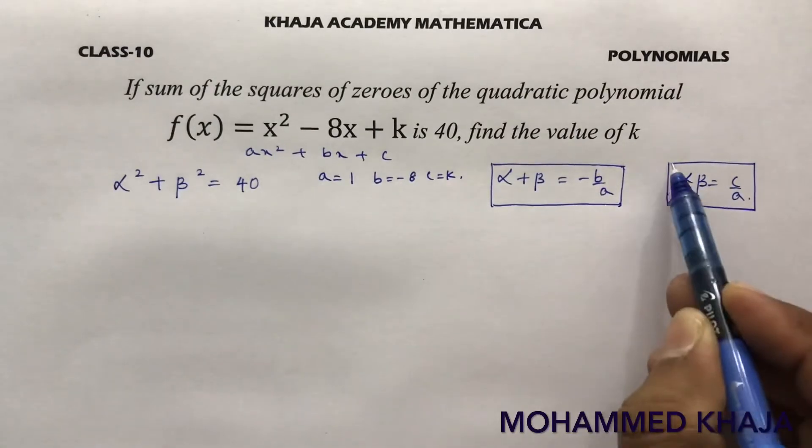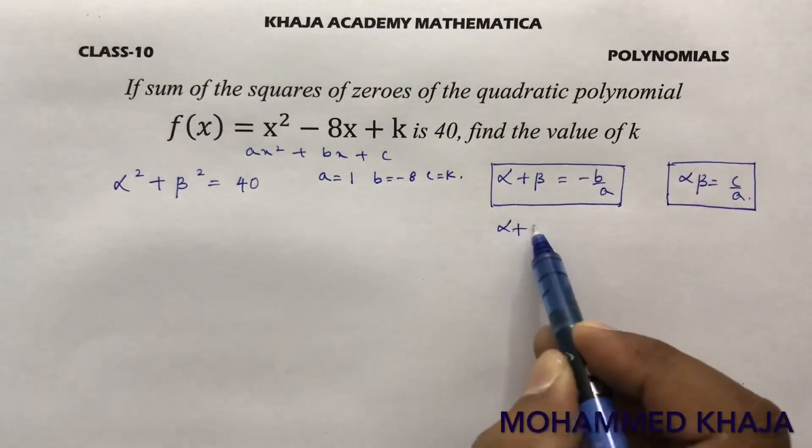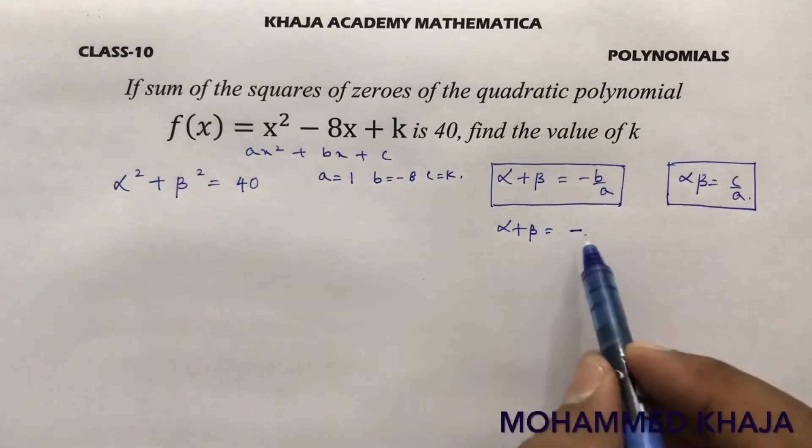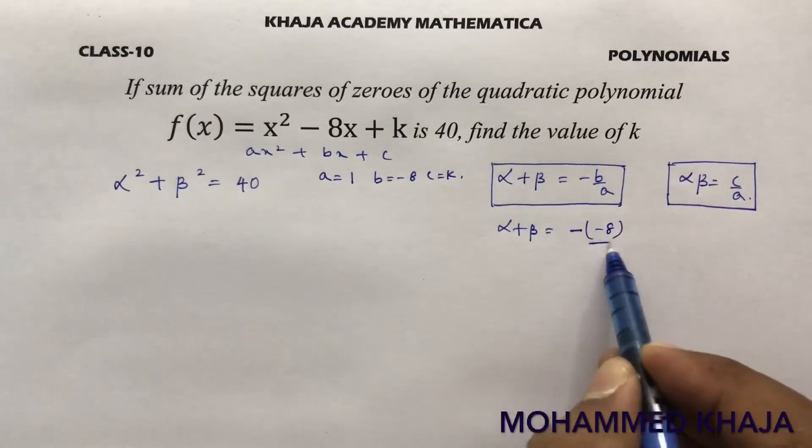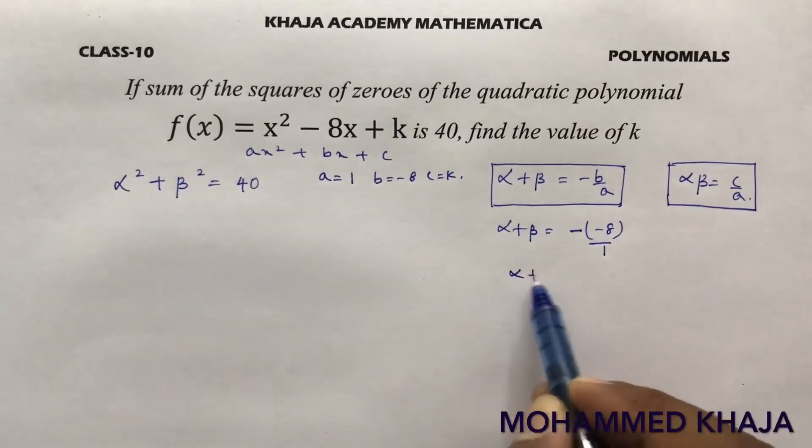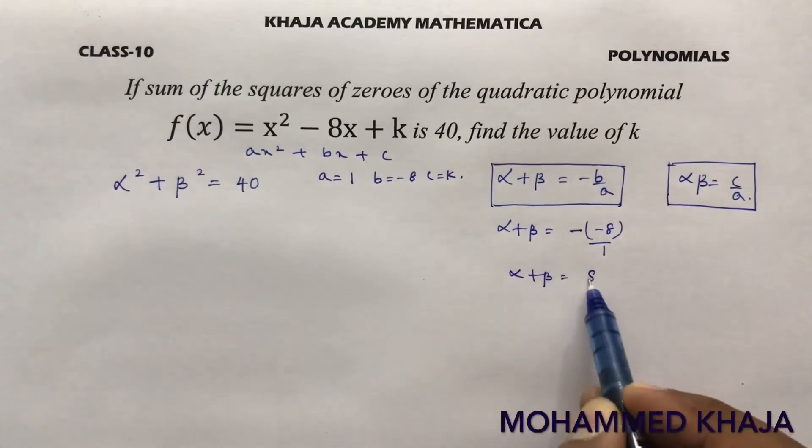First I will calculate these two values. Alpha + beta is -b. b is again -8, a is 1. So alpha + beta is 8.